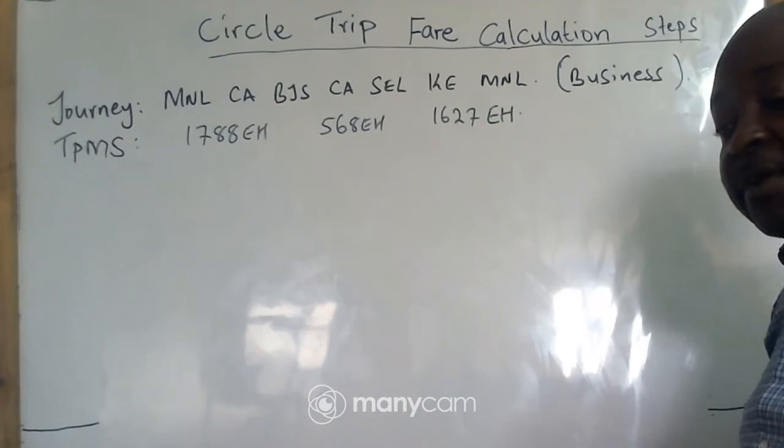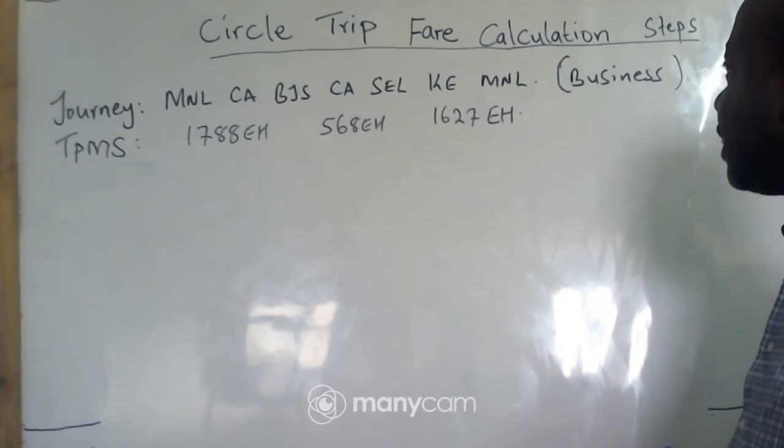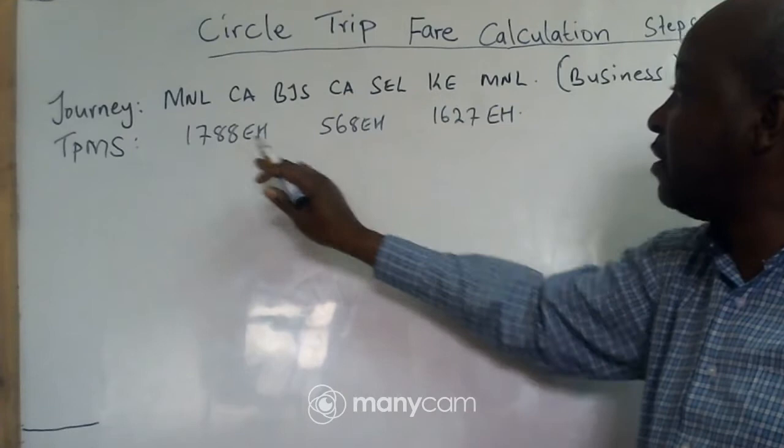So if you look at this journey again, we have the class of service — it's very important. This itinerary has decided to use business class. And then we have the TPMs — Ticketed Point Mileages — they are accumulated miles. Here we have our TPM values. So let us go to the steps.